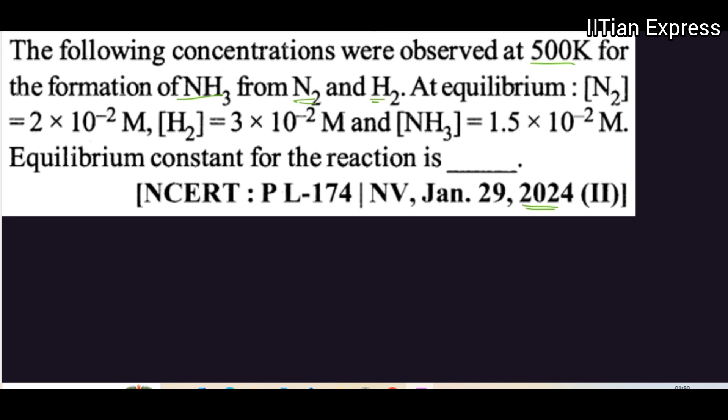At equilibrium, the concentration of N2 is equal to 2 × 10⁻² molar, the concentration of H2 is equal to 3 × 10⁻² molar, and the concentration of ammonia is equal to 1.5 × 10⁻² molar. Find the equilibrium constant for the reaction.